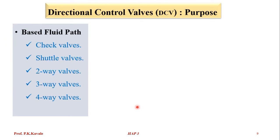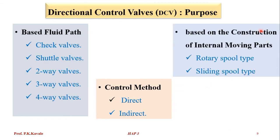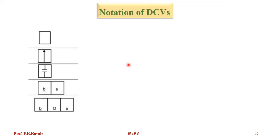The classification of directional control valves: first, based on the fluid path — check valve, shuttle valve, two-way, three-way, and four-way valves. Second, based on the control method of actuation of the spool — direct or indirect. Third, based on the construction of the internal moving part — rotary spool type or sliding spool type.